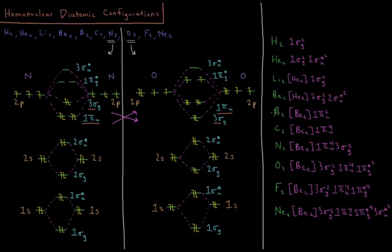For our boron-2, we have 1πiu2 preceded by the beryllium configuration. Then for carbon, we add two more electrons to 1πiu. So for carbon, it has beryllium 1πiu4.